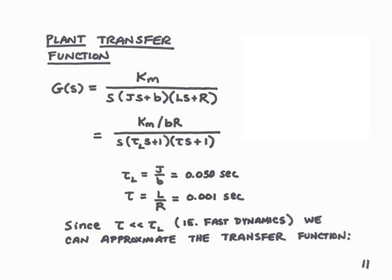Tau sub L will be J over B, and this is a mechanical time constant associated with the inertia and friction of the arm. With some typical numbers, this is 0.05 seconds. Tau is an electrical time constant associated with the voice coil. It's the inductance of the voice coil divided by its resistance. And with typical numbers, we find this to be 0.001 second.